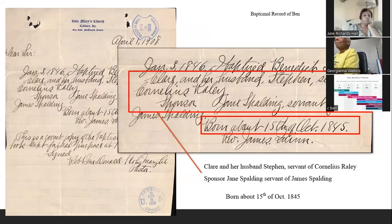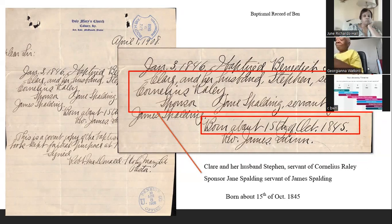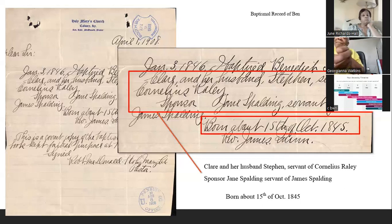Within the pension file was a baptismal record stating: 'January 3rd, 1846 — I baptized Benedict, son of Claire and her husband Stephen, servant of Cornelius Raley. The sponsor was James Spaulding, servant of James Spaulding, born about the 15th of October 1845.' I was floored — there I had a baptismal record for my third great-grandfather born in 1845. My research question was answered: his mother's name was Claire, and Cornelius Raley was his enslaver.